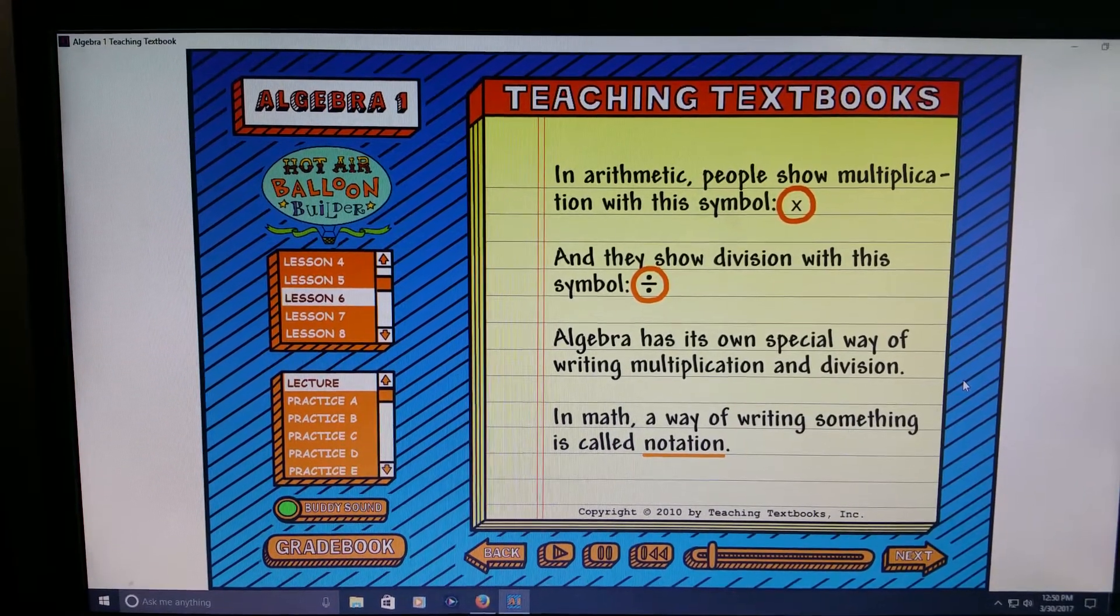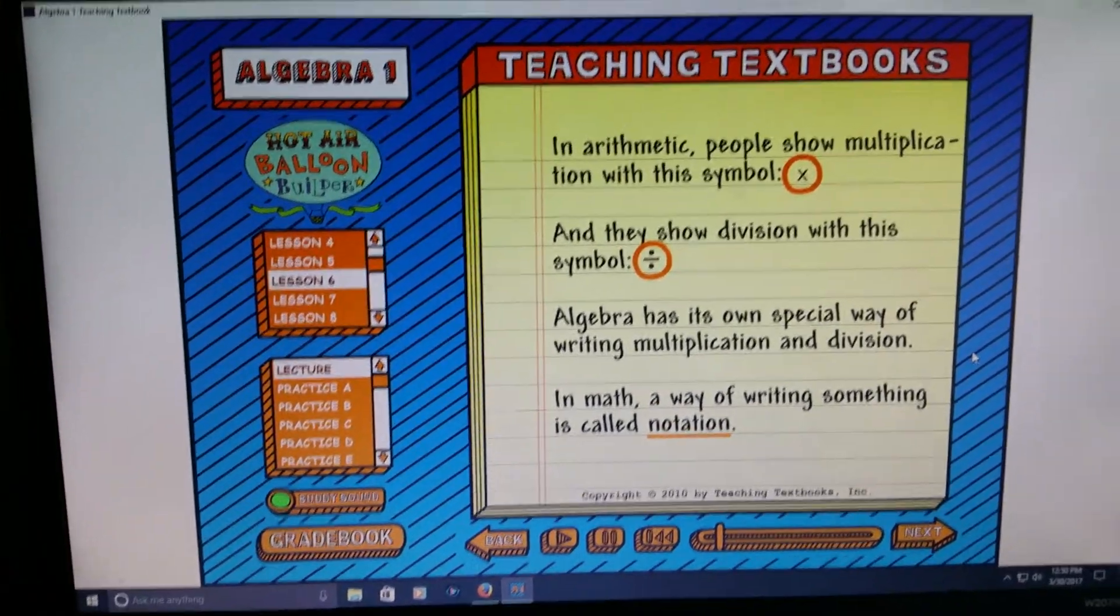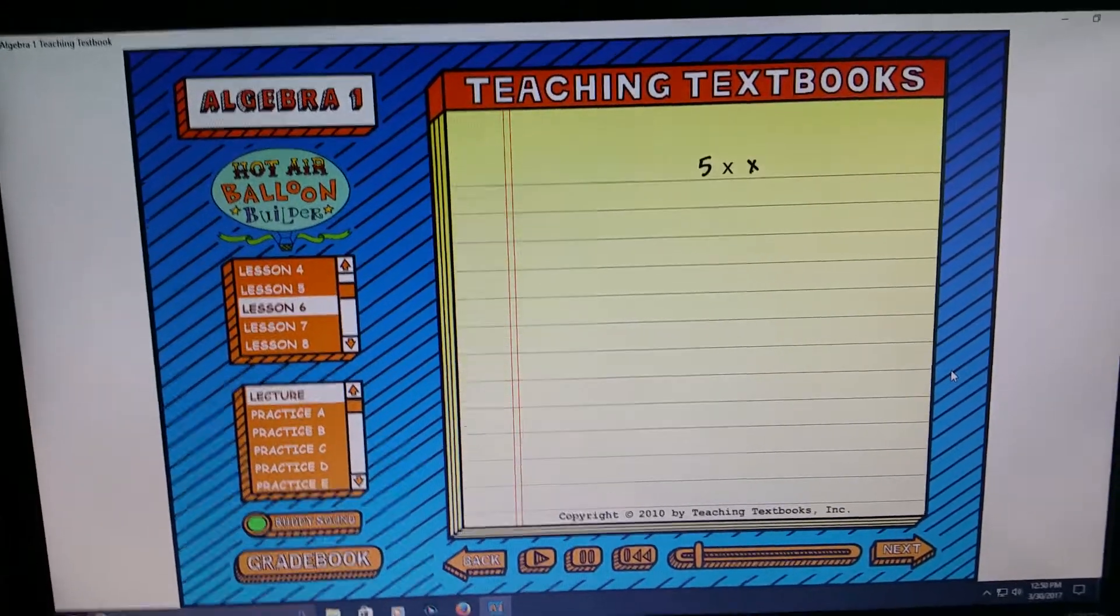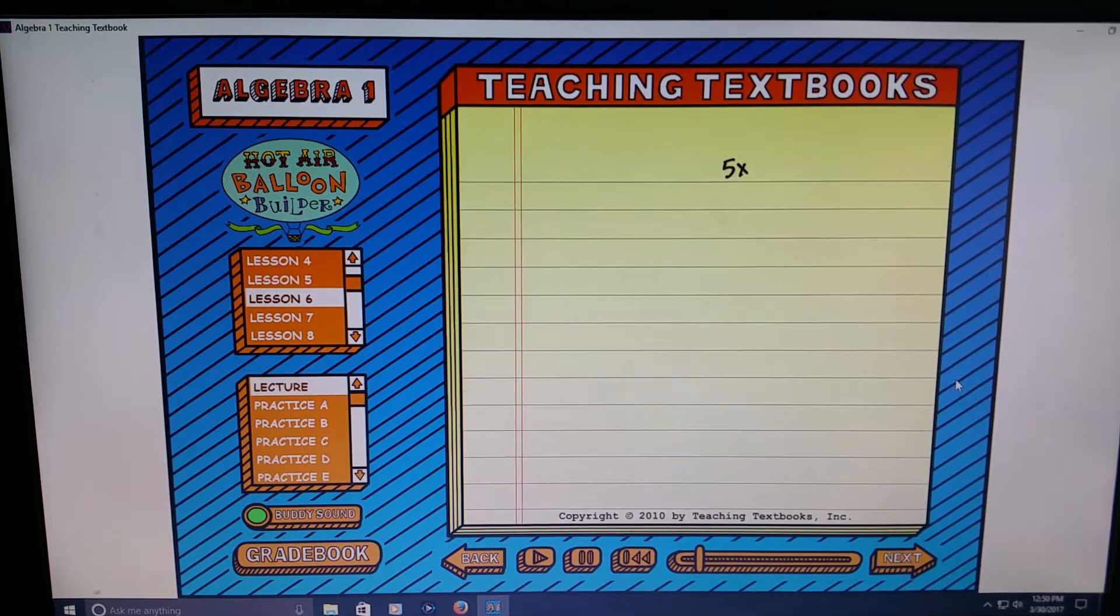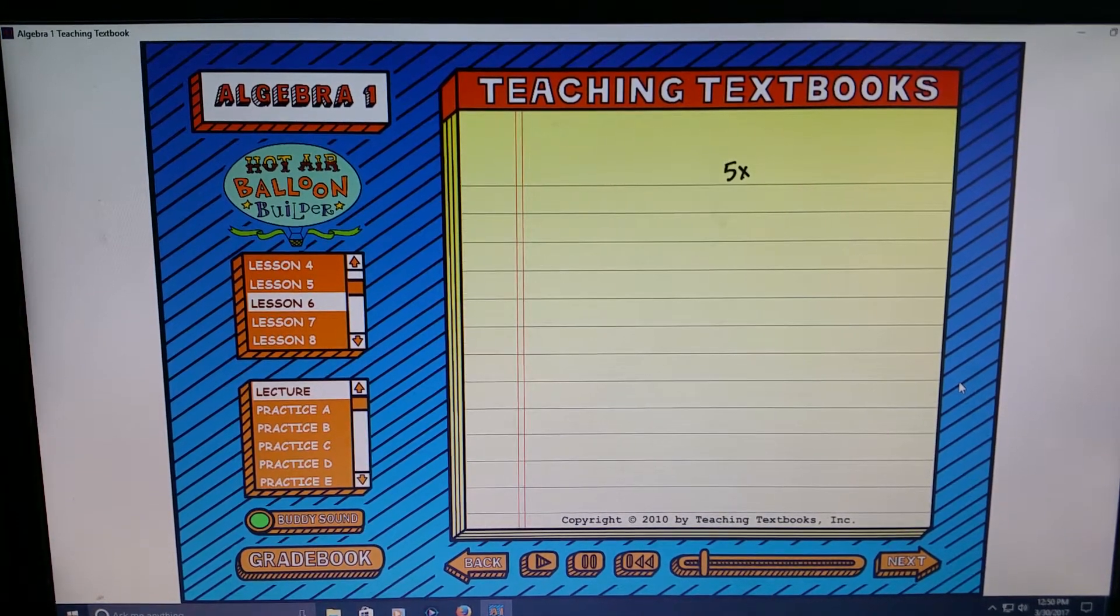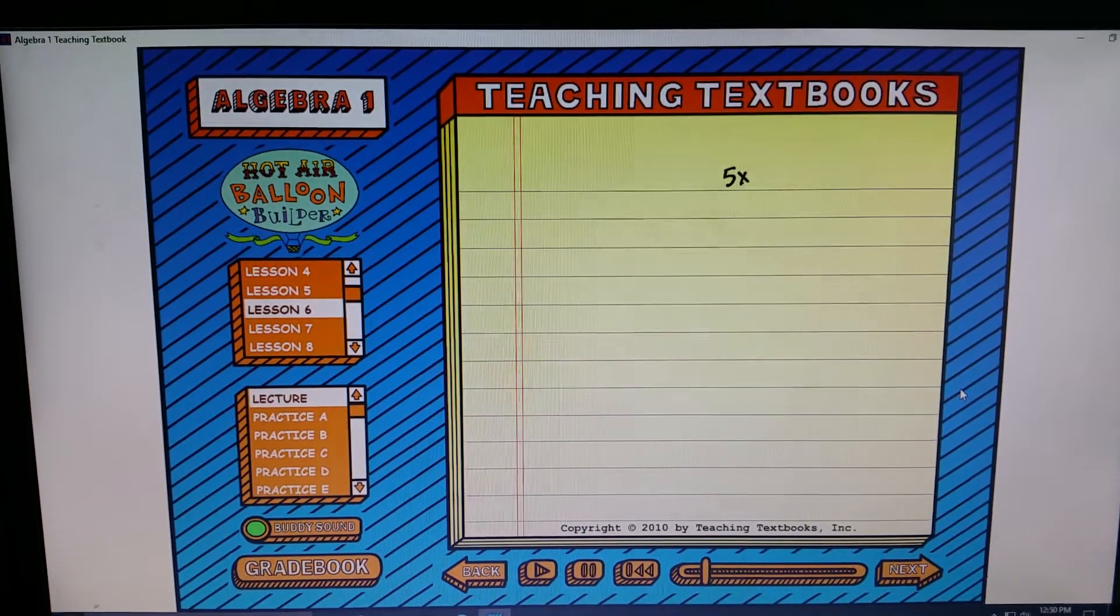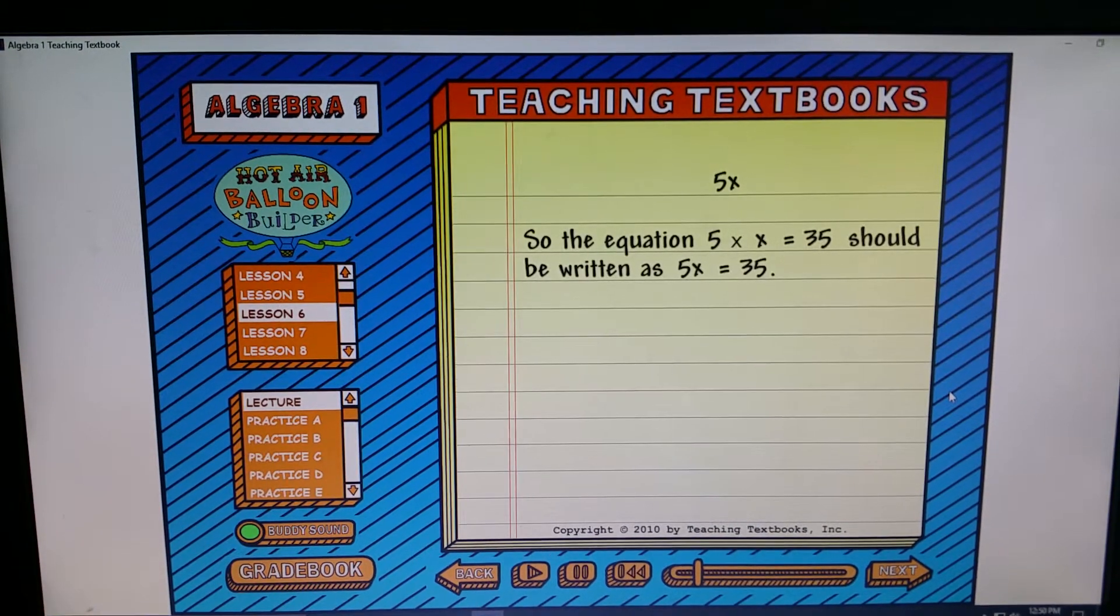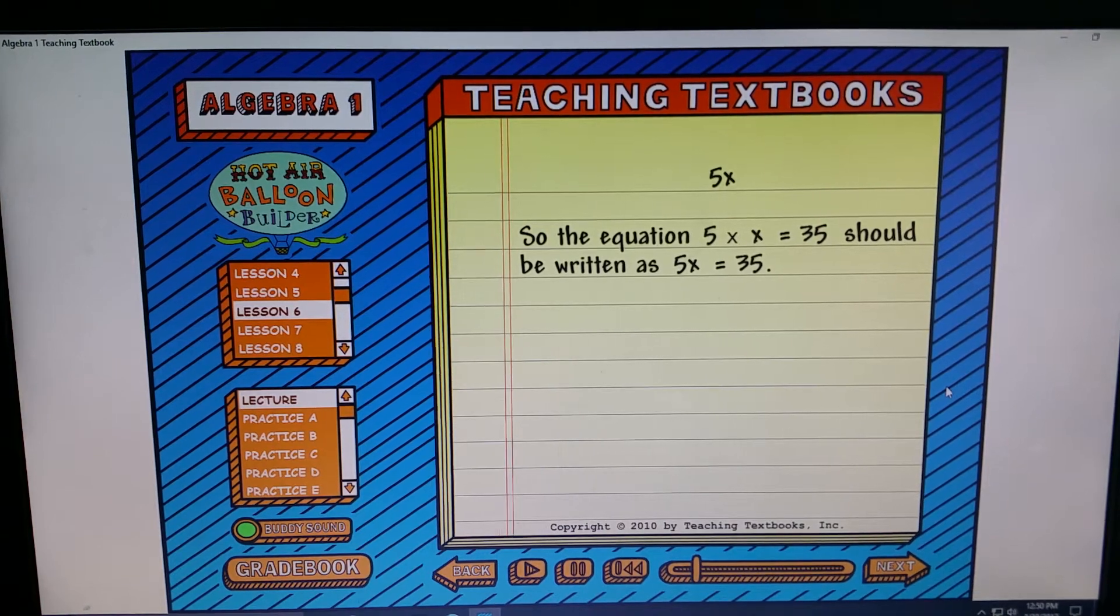In algebra, instead of writing five multiplied by X like this, the way it's done is you just put the five and X right next to each other. So using proper algebra symbols, if you had an equation like five times X equals 35, the proper way to write it is 5X equals 35. And there are several advantages to doing it this way. Just pushing the five and X together takes up less space, and that helps because algebra problems can be pretty long. It's also less confusing because the old multiplication symbol, the old times symbol from arithmetic, it actually looks a lot like an X, so that can confuse you.